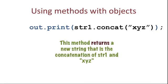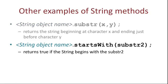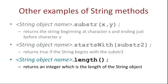Here are a few other commonly used string methods. Substring will return a new string. StartsWith returns a Boolean value of true or false. Length returns an integer. In each case, we must somehow preserve the returning value.